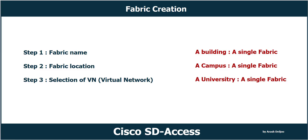In this video I am going to explain how we can create our SDA fabric in Cisco DNA Center. Fabric creation in Cisco DNA Center is a very simple process and initially requires only three parameters: step one, fabric name; step two, fabric location; and step three, selection of which virtual networks or VNs to make part of the fabric.